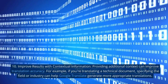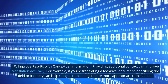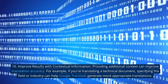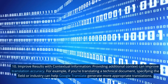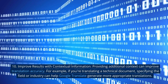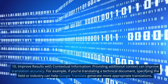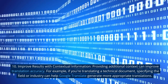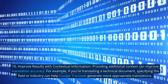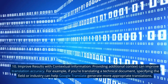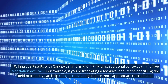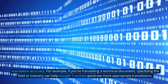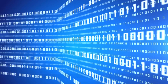10. Improve results with contextual information. Providing additional context can improve translation accuracy. For example, if you're translating a technical document, specifying the field or industry can help Google Translate generate more appropriate translations.